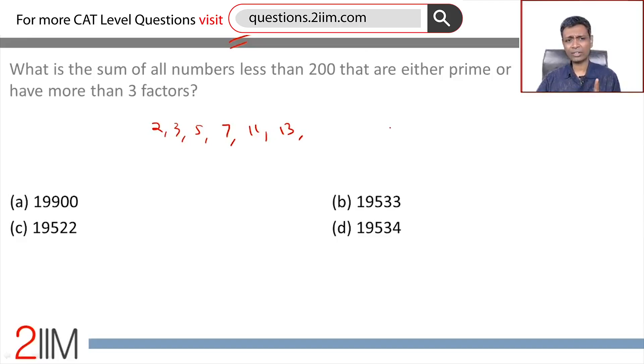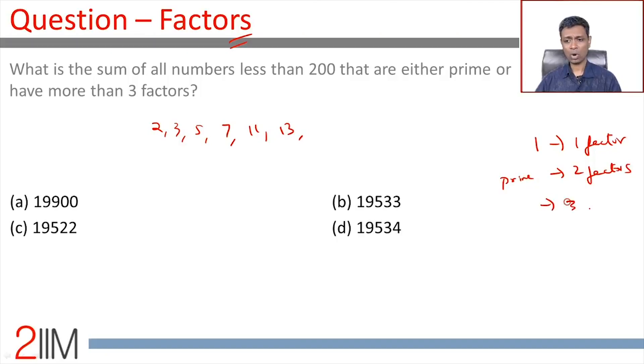What kind of numbers will have three factors? What kind of numbers will have one factor? Number one has one factor, that we know. What kind of numbers will have two factors? Any prime number will have two factors. What kind of number will have three factors?